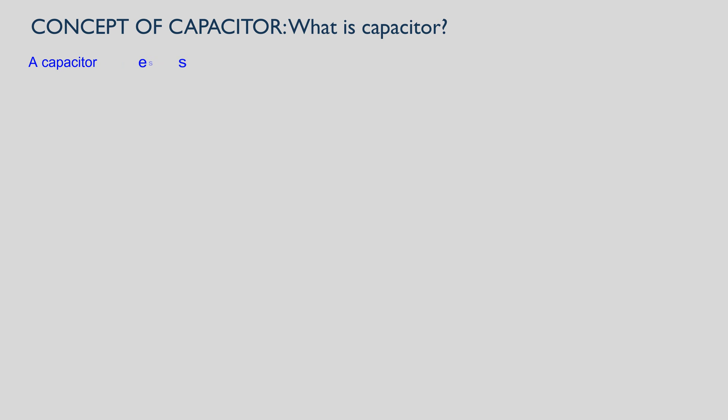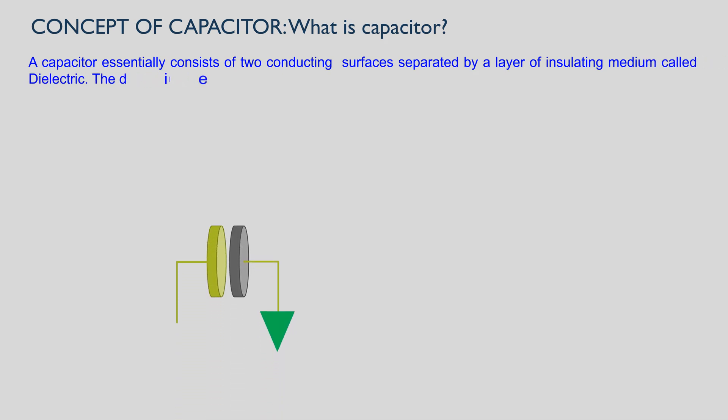What is capacitance? A capacitor essentially consists of two conducting surfaces separated by a layer of insulating medium called dielectric. The dielectric medium may be air, mica, oil, cotton, wood, wax, and insulators.